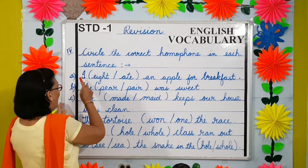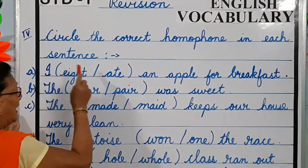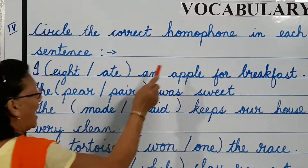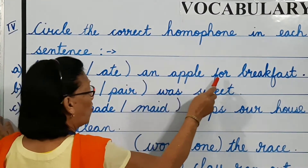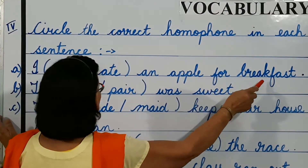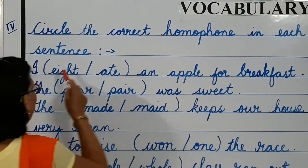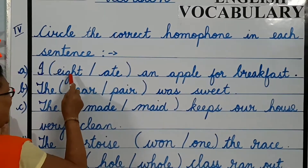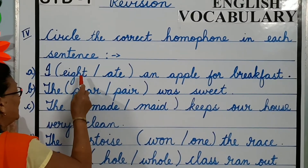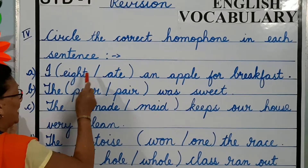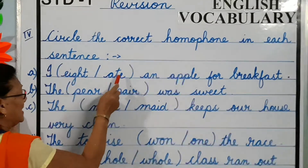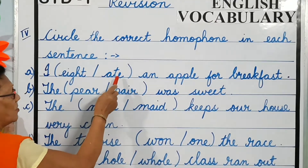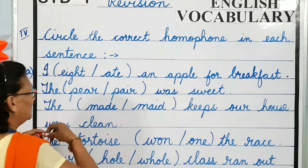A. I ate an apple for breakfast. E-I-G-H-T: eight is a number. A-T-E: ate is the past tense of eat.